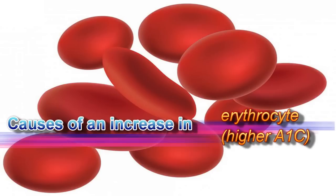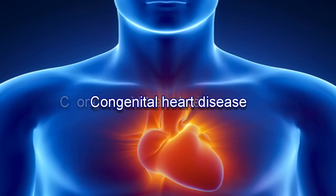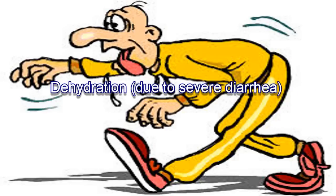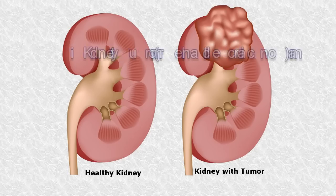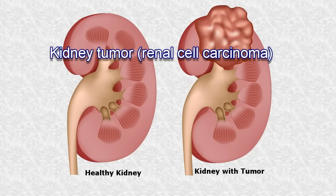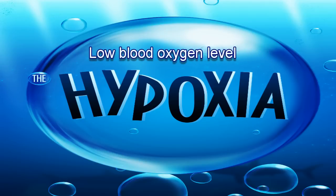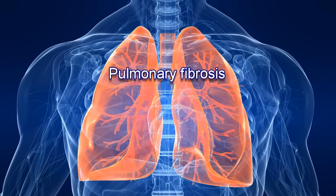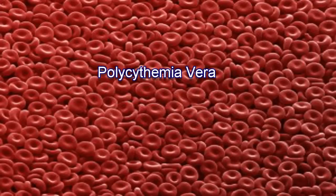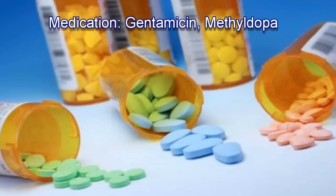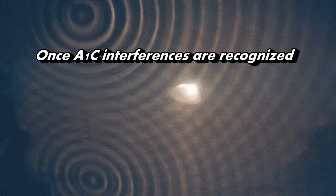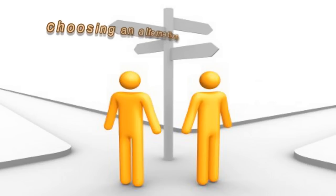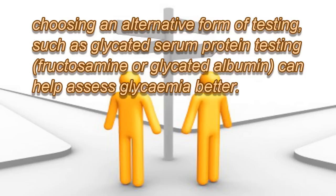Causes of increased erythrocytes leading to higher A1c include cigarette smoking, congenital heart disease, dehydration due to severe diarrhea, kidney tumor (renal cell carcinoma), low blood oxygen level (hypoxia), pulmonary fibrosis, polycythemia vera, and medications such as gentamicin and methyldopa. Once A1c interferences are recognized, choosing an alternative form of testing — such as glycated serum protein testing (fructosamine) or glycated albumin — can help assess glycemia better.